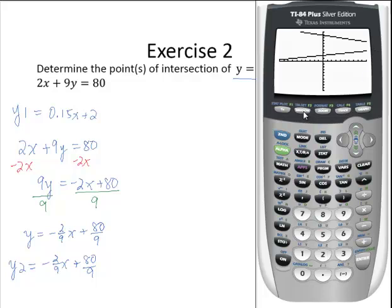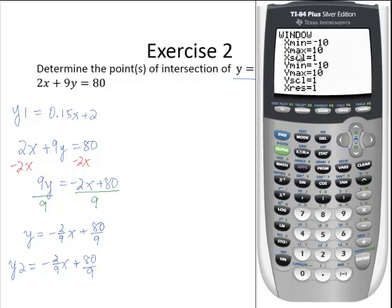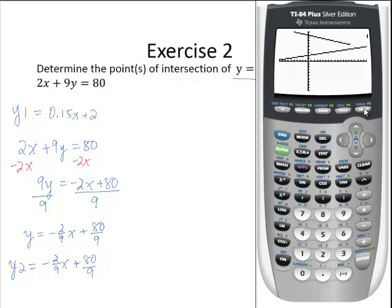So let me go to my window. And I will adjust the x maximum since I need to see further to the right, and I'll replace the 10 with a 20. Regraph it, and I can see the point of intersection.